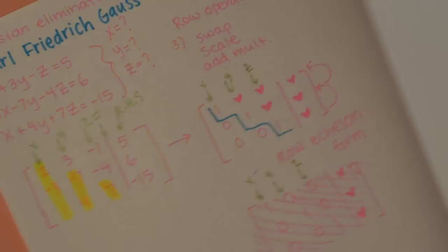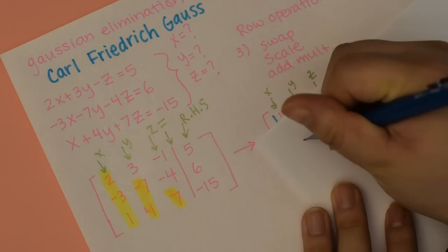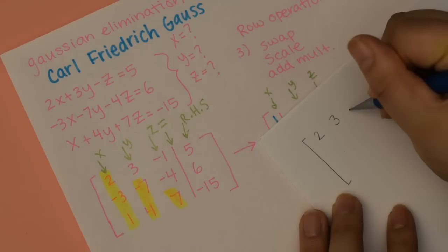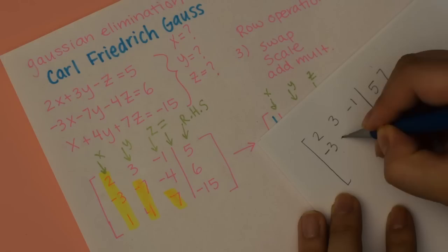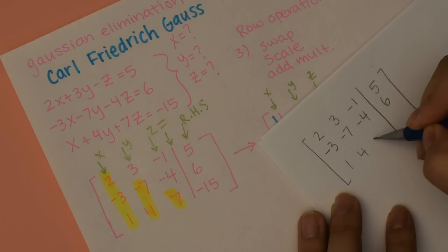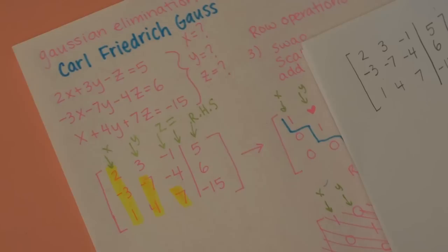We have this augmented matrix to represent this system. So: 2, 3, negative 1, 5; negative 3, negative 7, negative 4, 6; 1, 4, 7, negative 15.